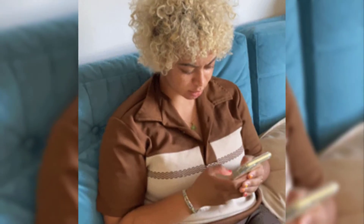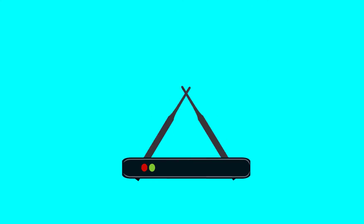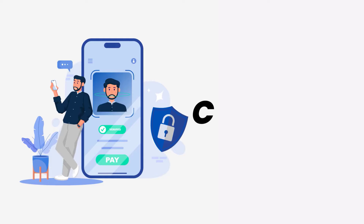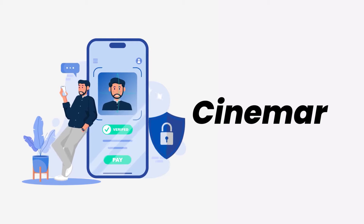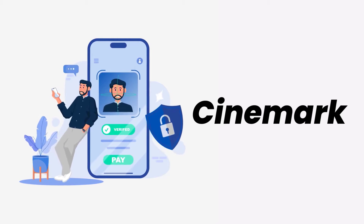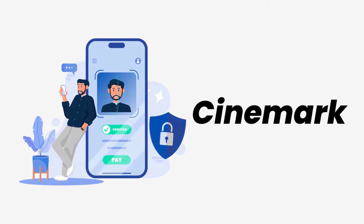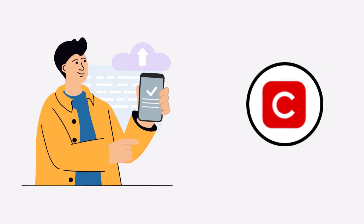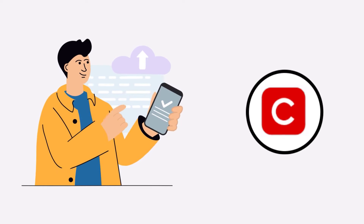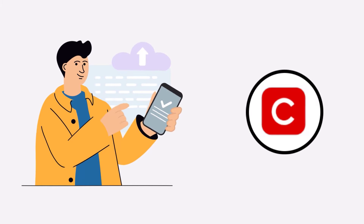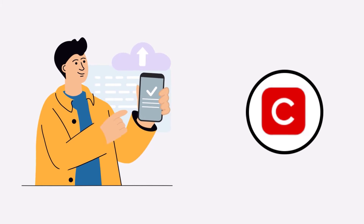It might be possible that you're not able to log into the Cinemark mobile app due to a connectivity issue. First of all, you need to make sure you have a strong and stable internet connection. To do so, you need to do a quick test — simply open up an app that runs on the internet other than the Cinemark mobile app and check if it's working or not.